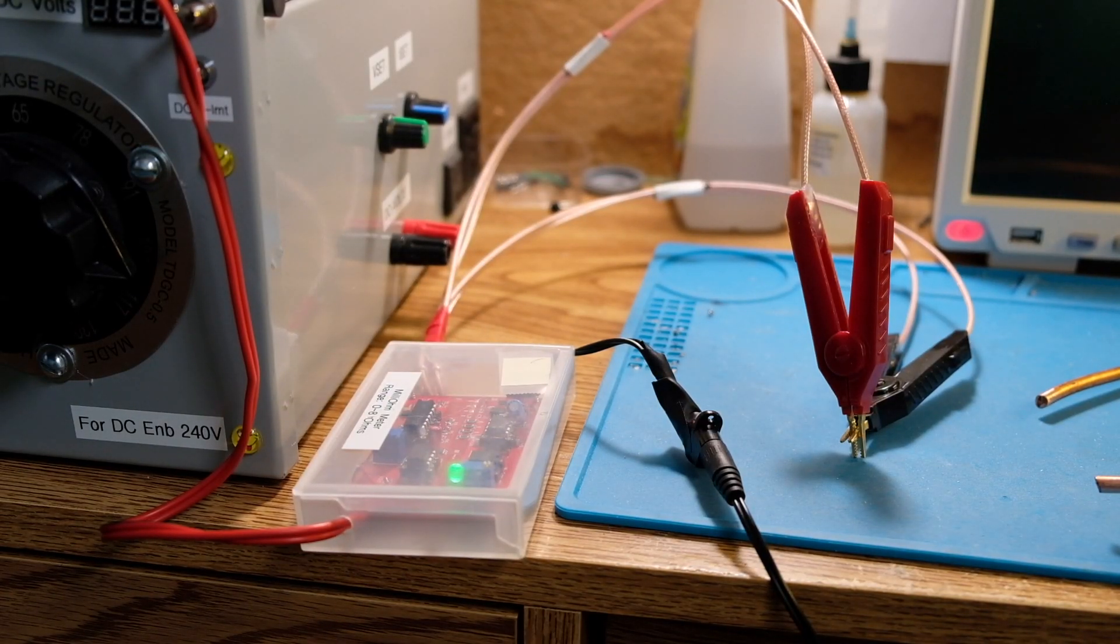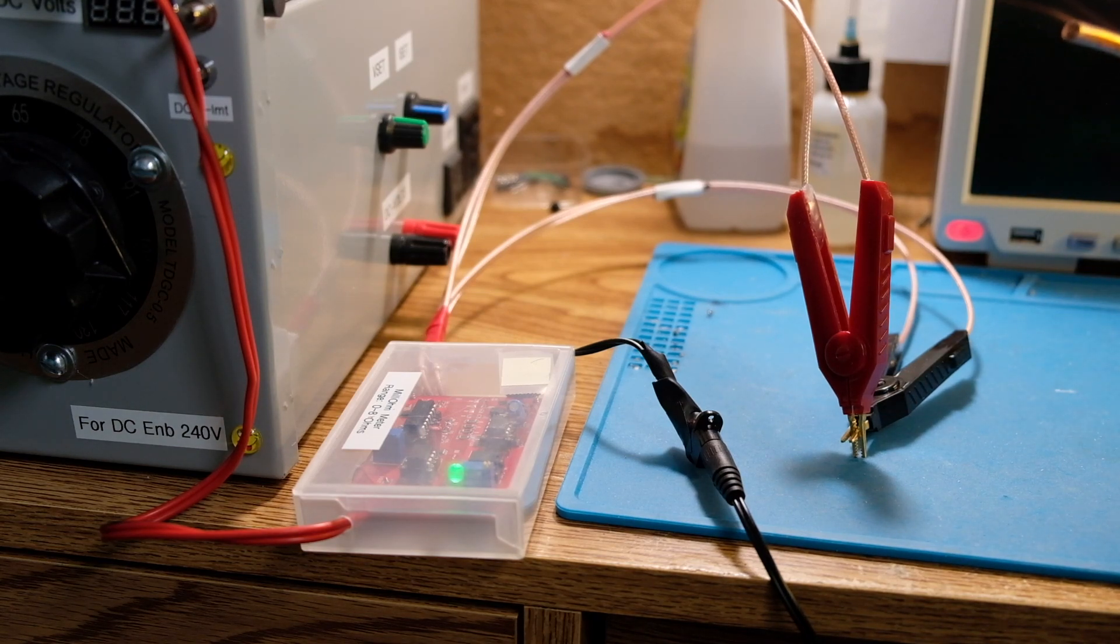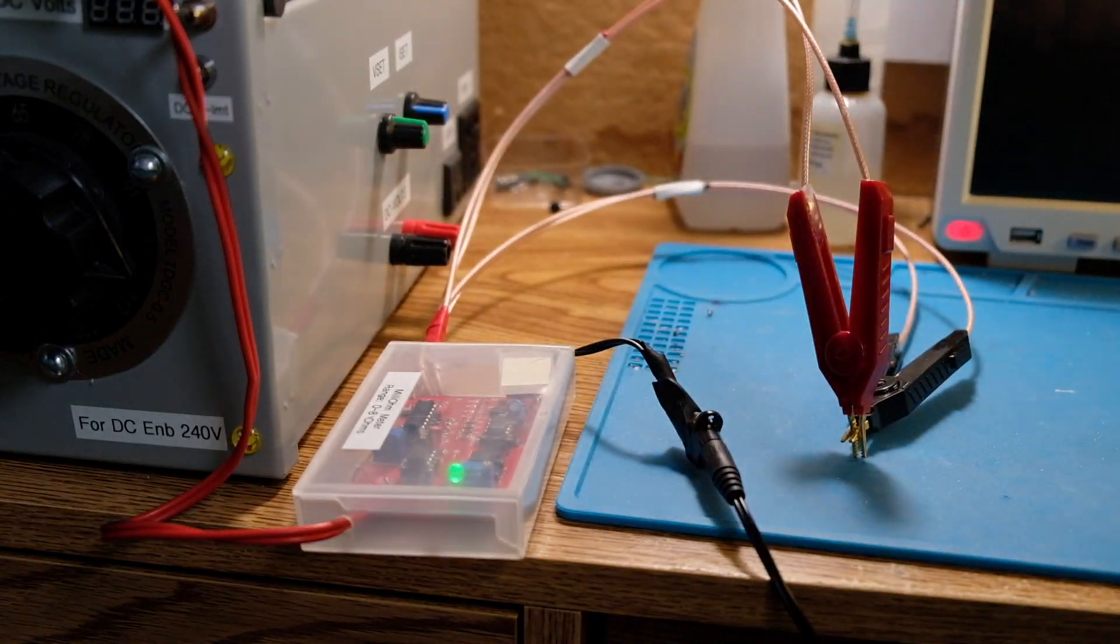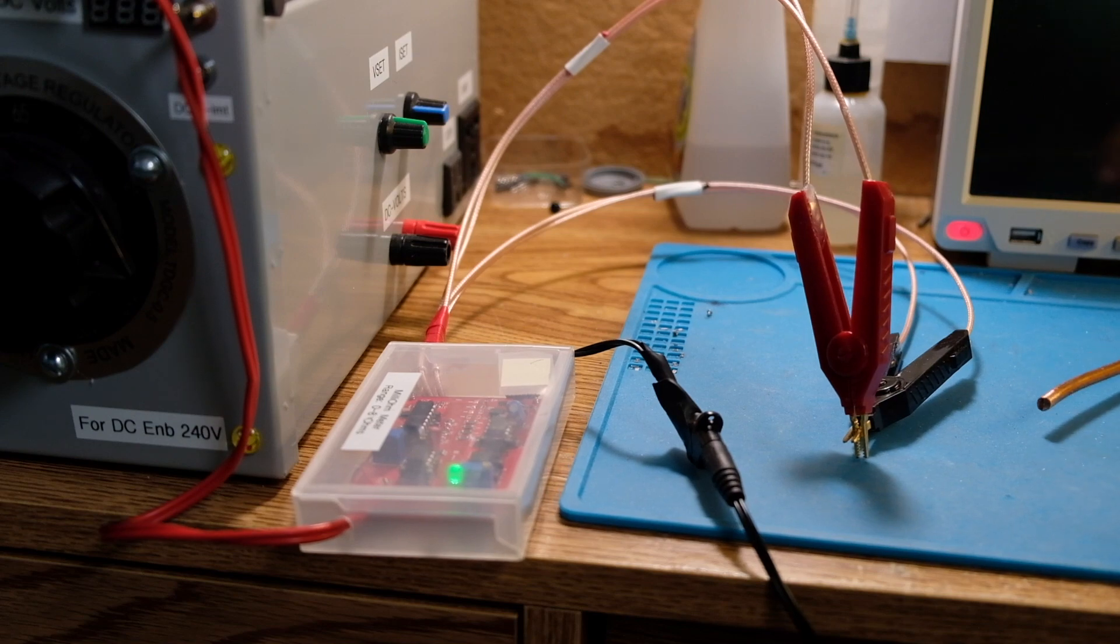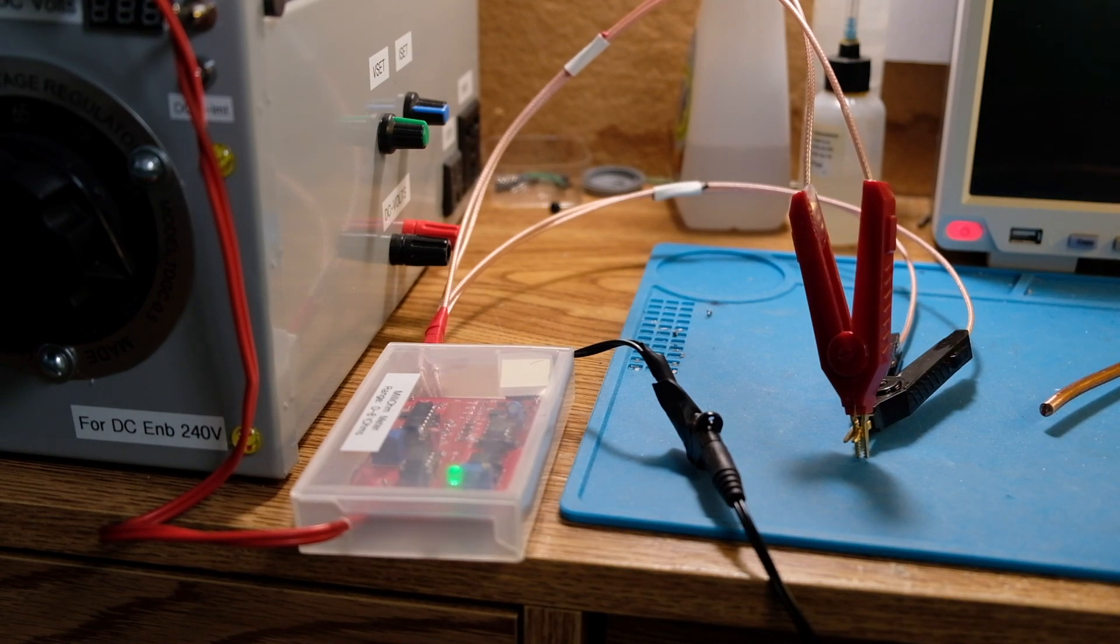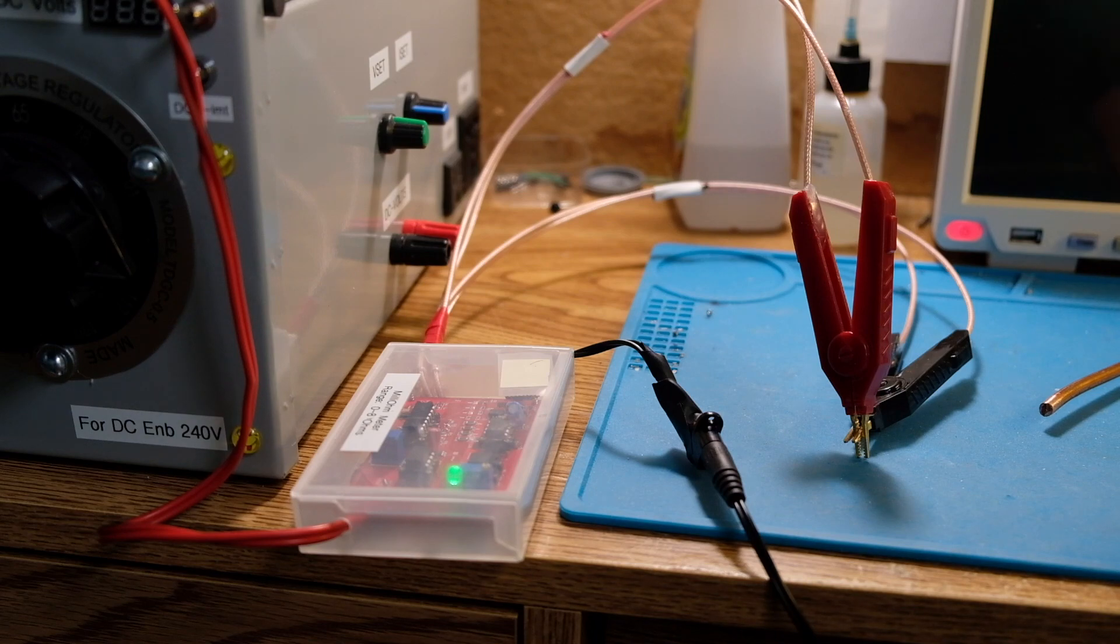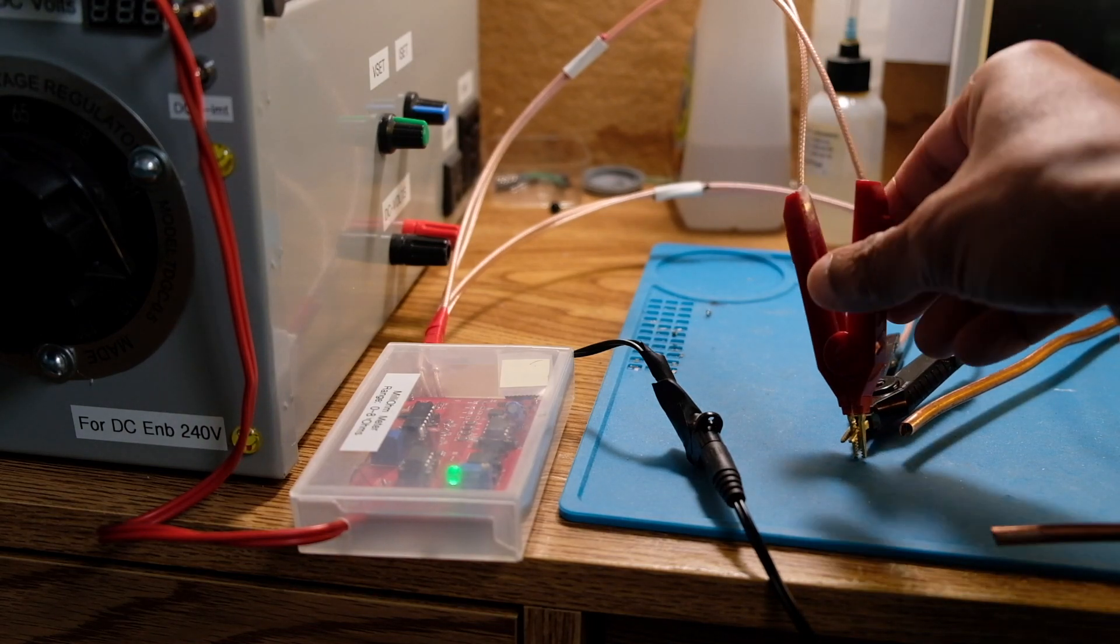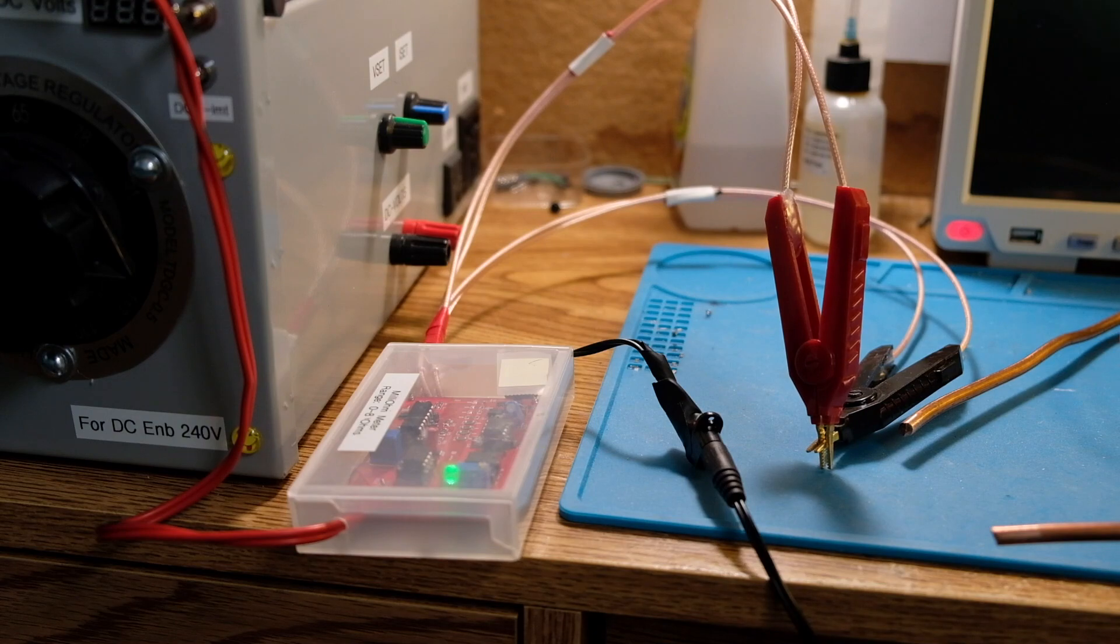Here's the setup to do a low resistance measurement of a very thick copper wire. As you can see, this wire here is very solid, barely bendable. It's number 4, the diameter is 0.2 inches AWG4. Length is 1.6 meters or 1.58 meters to be exact, and right now I've shorted the Kelvin clamps as best as I could.